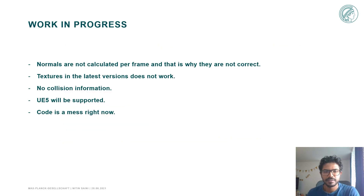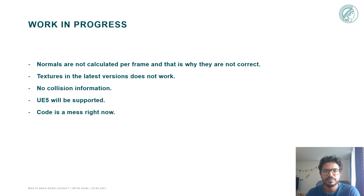Since it's a work in progress, a few things are not working. Ideally the normals should be recalculated every frame, but the Unreal built-in function for normals calculation is too slow — if I use it, the frame rate drops below 10 fps. So I need to find a better way of calculating normals. The texture in the latest versions is not working but will be fixed. I will also add collision information in the future so that the user gets feedback if the mesh collides with the scene.